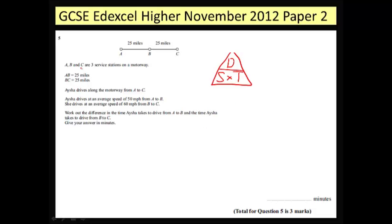So this says that there are three service stations on a motorway. The distance between them is 25 miles and 25 miles. Asia drives along the motorway from A to C with two different speeds.